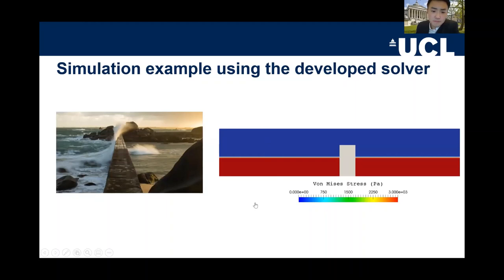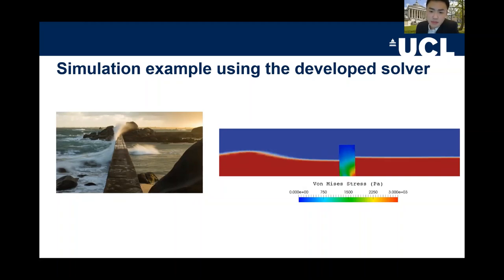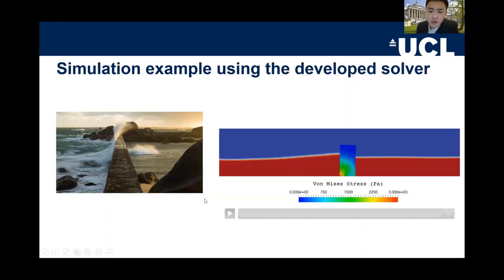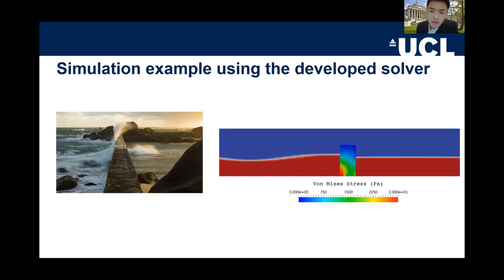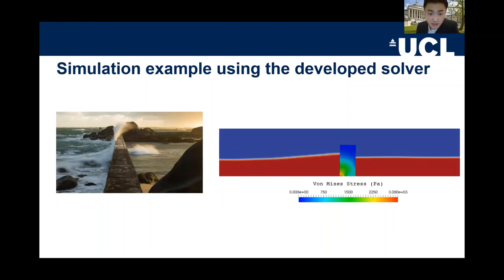I'd like to share one example using the developed software. The setup is straightforward — we have a coastal defense device near the coastline and when the wave comes, the device can deform with the wave. The deformation may be small or large. This lets us assess many different things: von Mises stress can be computed inside the device when the wave arrives, which we can use for fatigue assessment. We could also model breaking waves to induce more significant deformation.